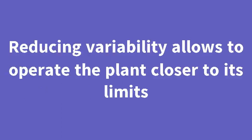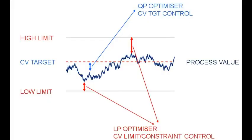If you can reduce process variability, then you can push the plant closer to its limits with confidence that you are not going to violate these limits. This allows you to shift the mean and possibly increase the throughput.